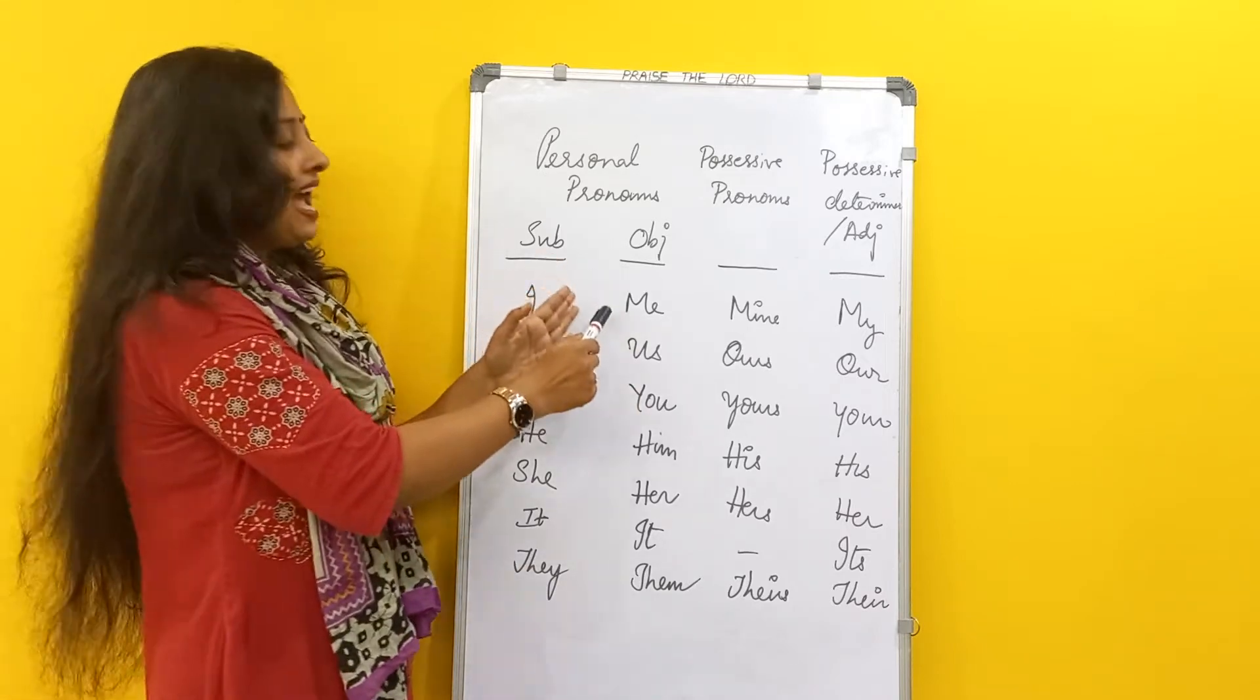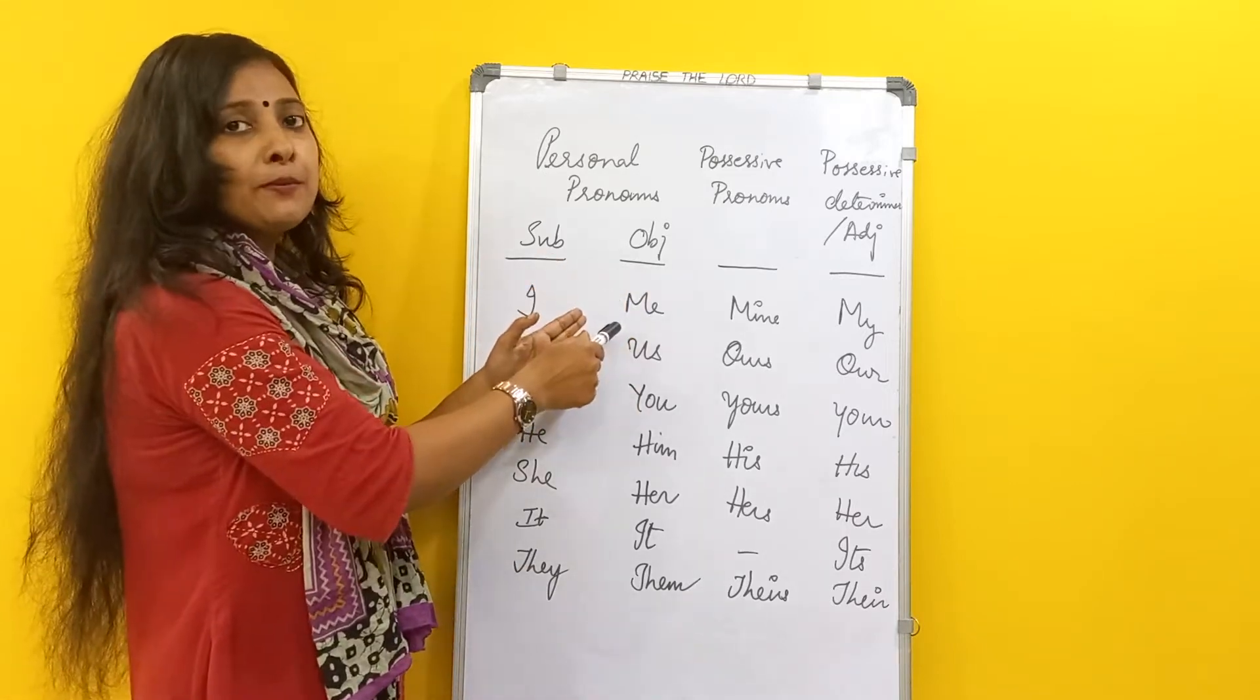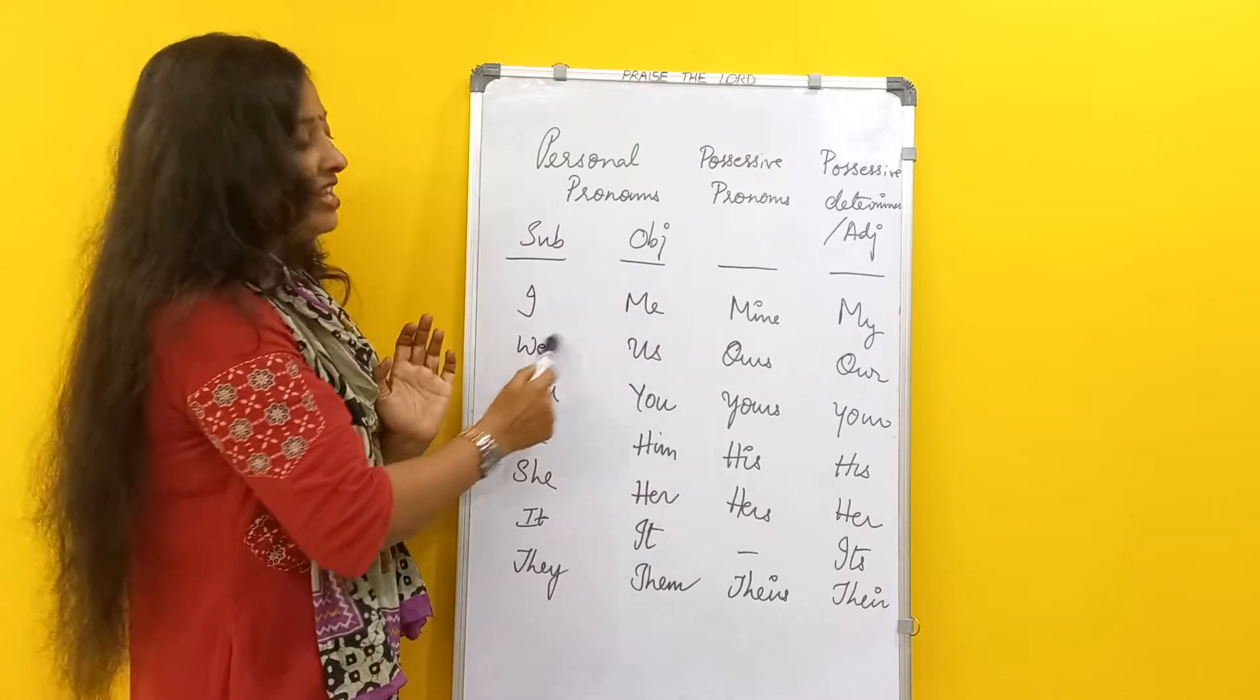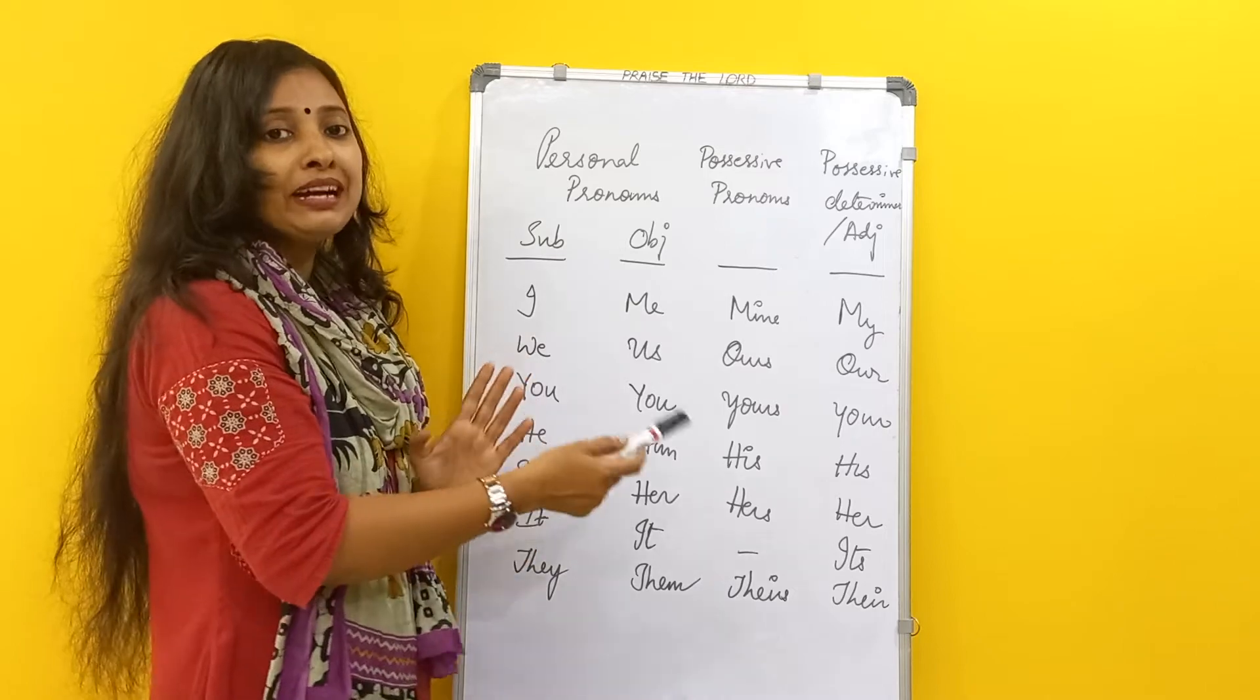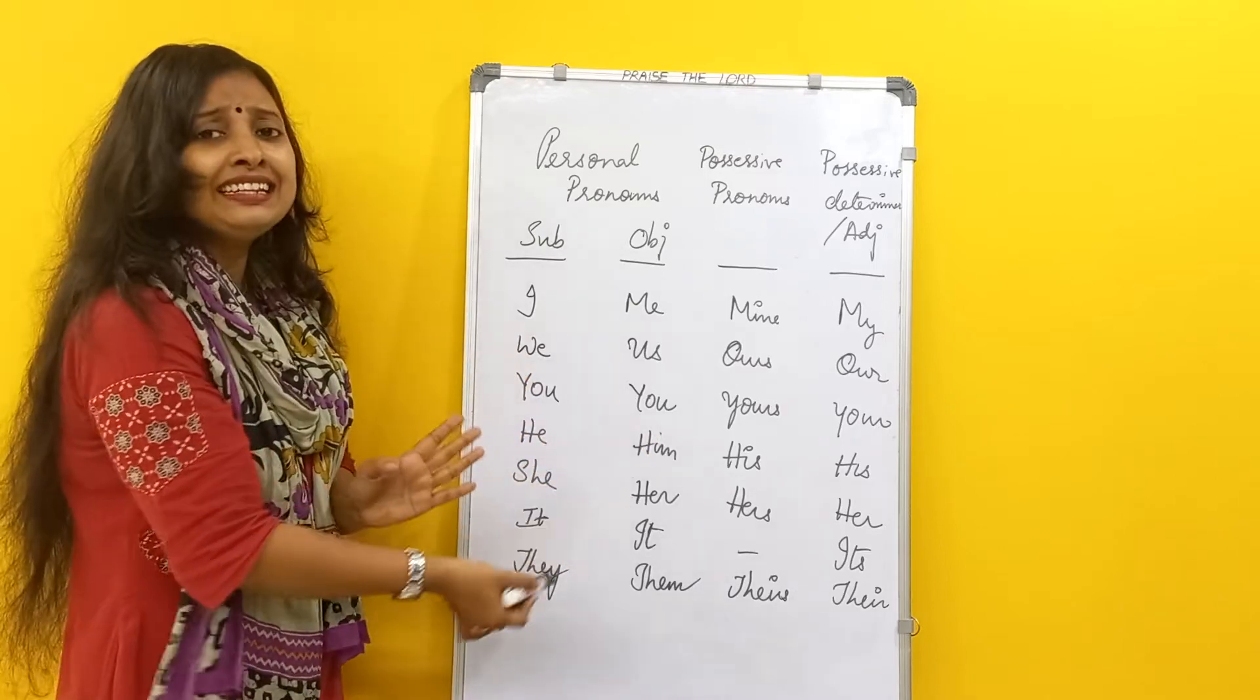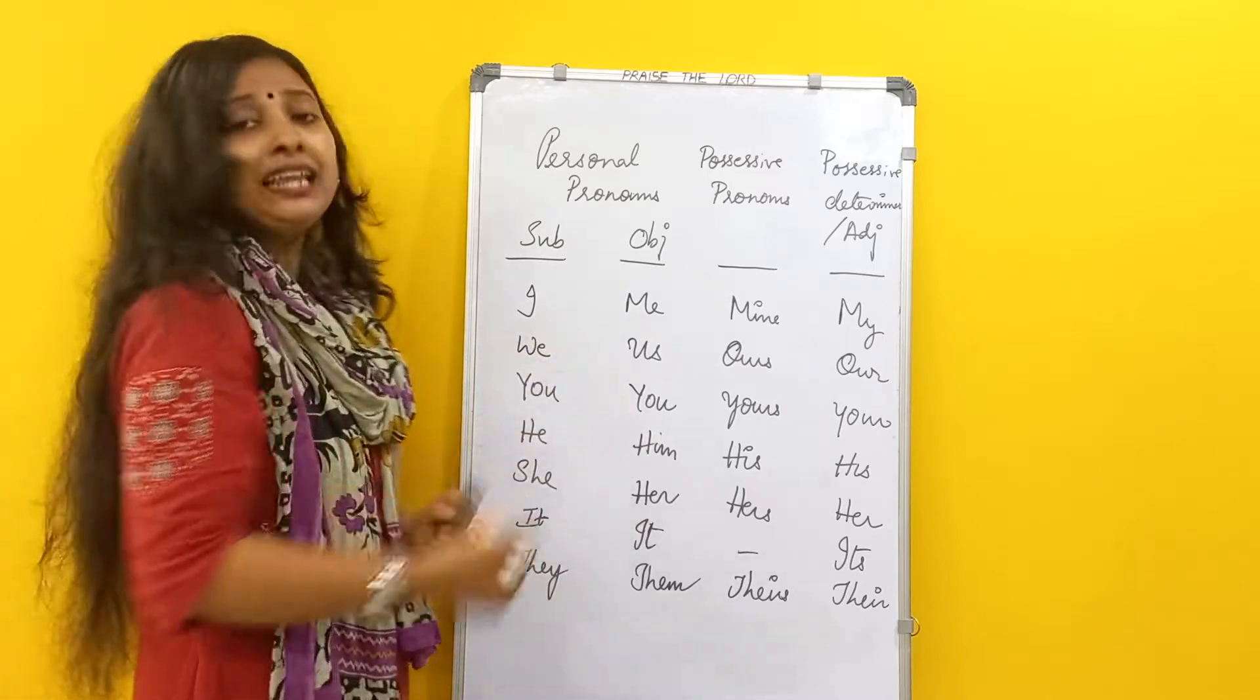So this will be transformed in the object pronoun. I will be me, we will be us, you will be you, he will be him, she will be her, it is it, and they will be them.